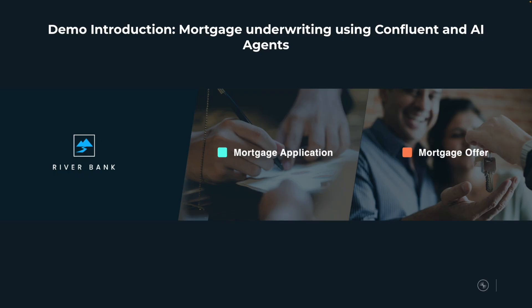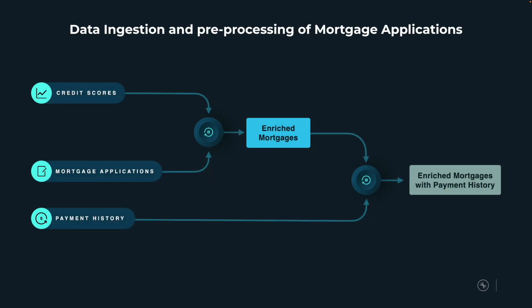After we process these mortgage applications, we'll also create some dashboards. But before doing that, let's go through the architecture diagram — at least the first half. Before processing these mortgages with our AI agents, we want to ingest the data. We have three main data sources.